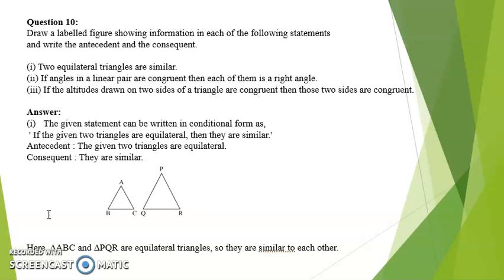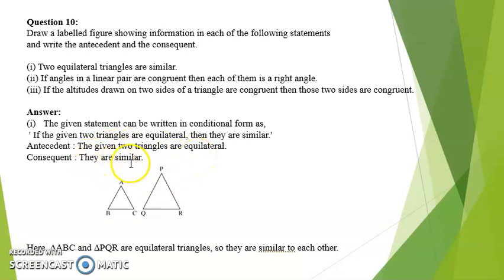Question number 10: draw a labeled figure showing information in each of the following statements and write the antecedent and consequent. First: two equilateral triangles are similar. The given figure shows two equilateral triangles. The conditional form is: if the given two triangles are equilateral then they are similar. Antecedent: the given two triangles are equilateral. Consequent: they are similar.